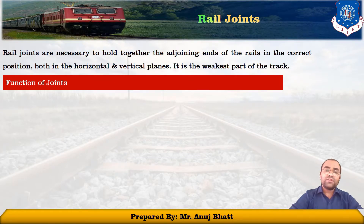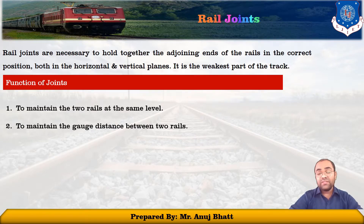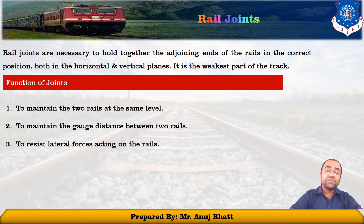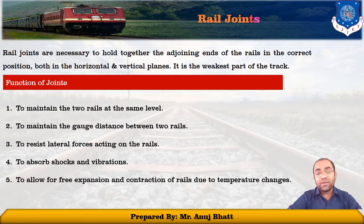Discussing about the functions of joints: the function of a joint is to maintain the two rails at the same level, to maintain the gauge distance between the two rails, to resist the lateral force acting on the rails, to absorb the shocks and vibrations, and also to allow for free expansion and contraction of the rails in the weather changes or temperature change. These five are the functions of joints.